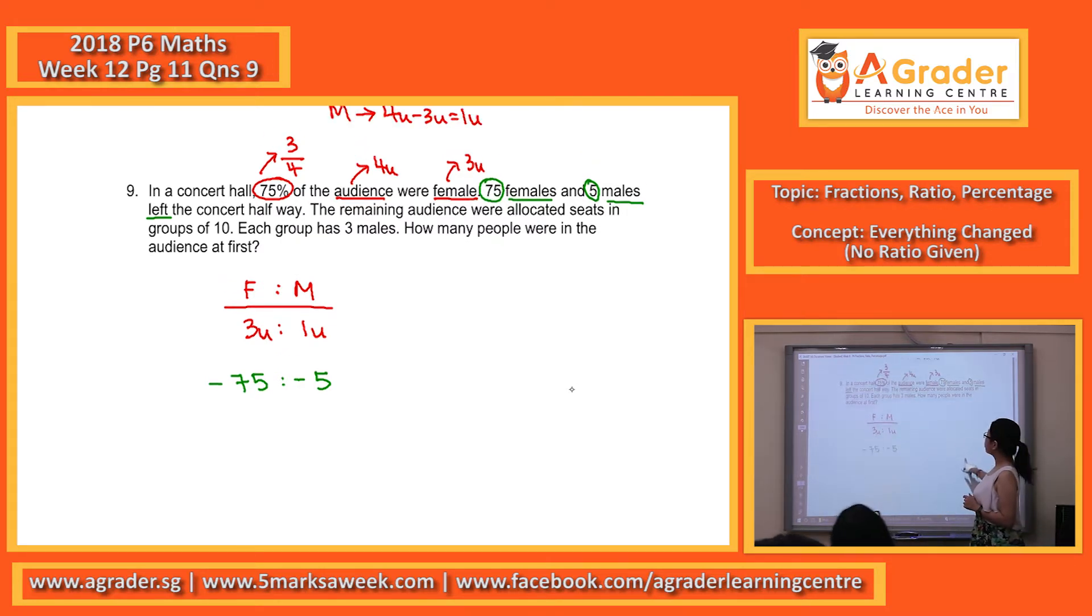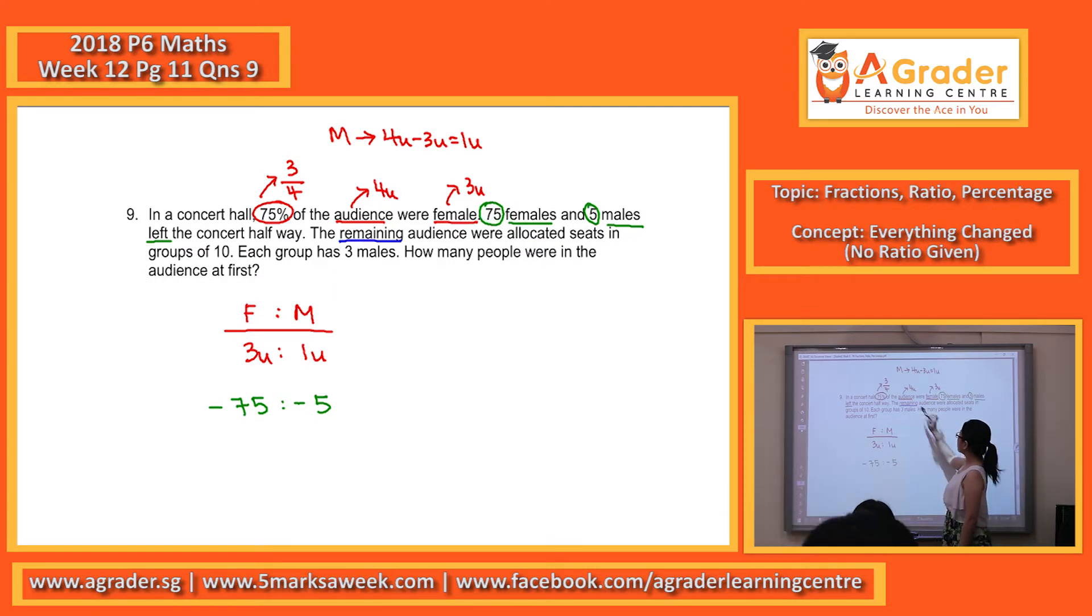The next one is the interesting one. The remaining audience were allocated seats in groups of 10. So there's always 10 in one group. So in other words, the total in this one group is 10.